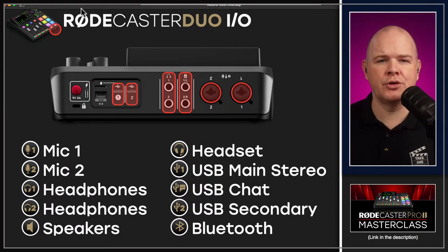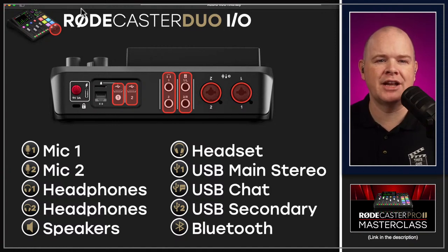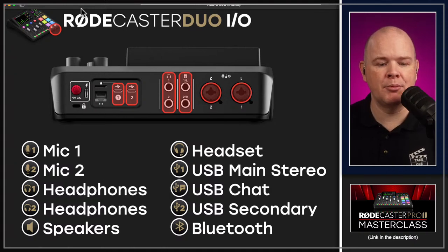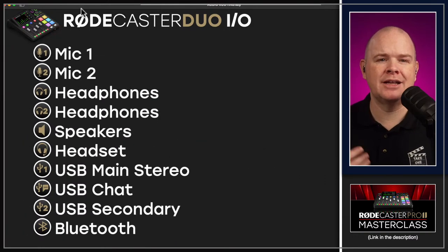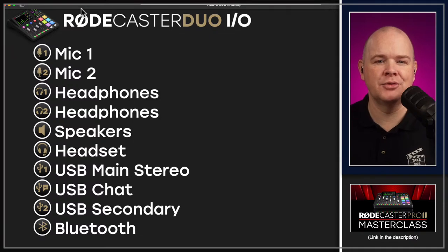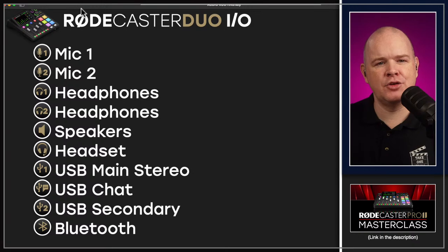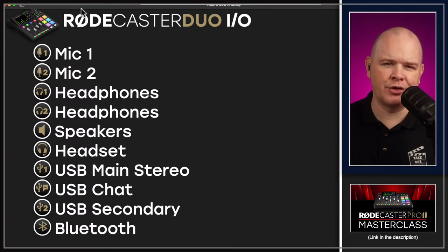So those are the sort of inputs and outputs. I haven't mentioned the power connection, or the slot for an SD card and Ethernet cable, but for now I'm just going to stick with the actual audio inputs and outputs. There can sometimes be confusion around these different cables going in and out, or the Bluetooth for wireless.